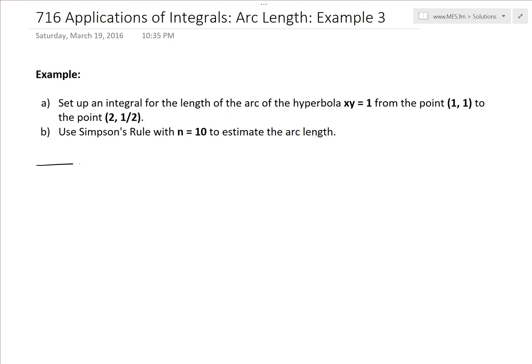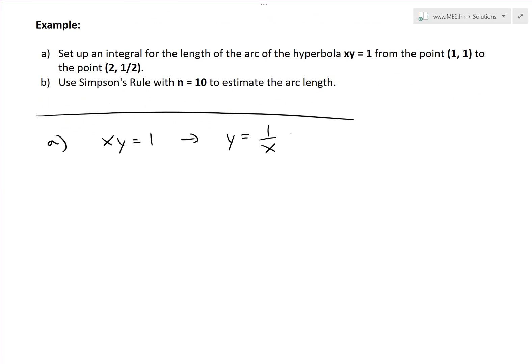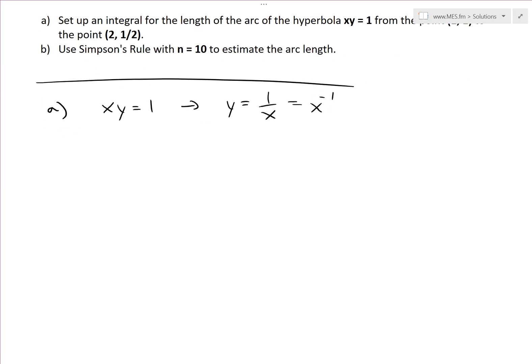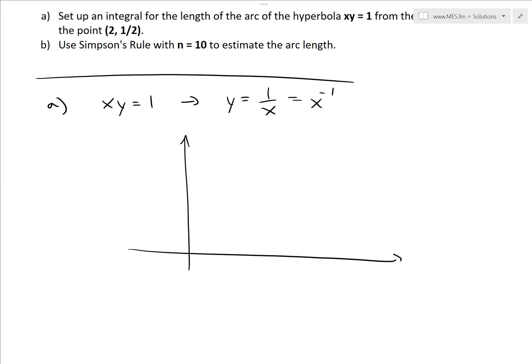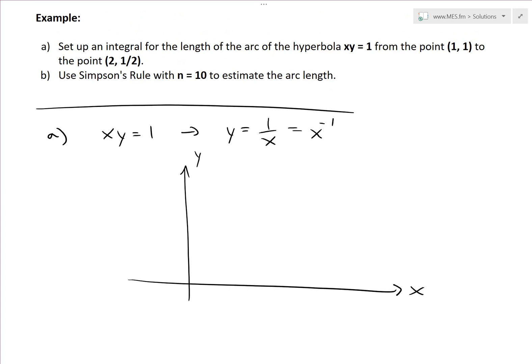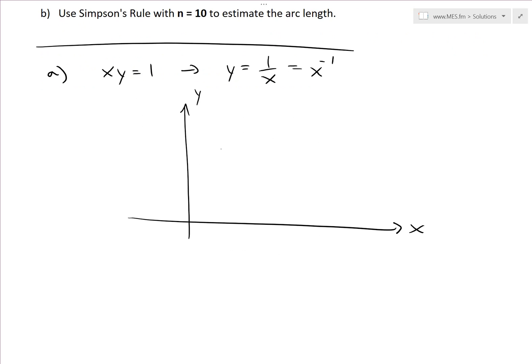So basically, this first function for part A, this function xy equals 1, since we're going from point (1,1). If we rearrange this, this equals 1 over x right here. So this is just 1 over x or x power negative 1 right here, doesn't matter how you write it. And the graph just basically looks like - we're only dealing from (1,1) to (2, 1/2). So that looks like something like this. This is 1 and it goes something like, let's graph it like that.